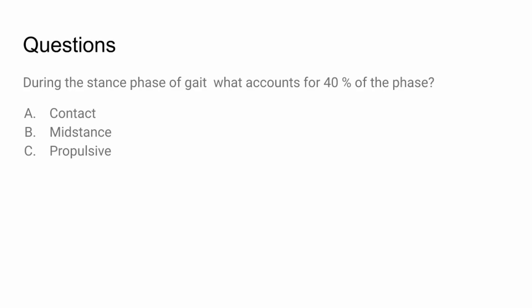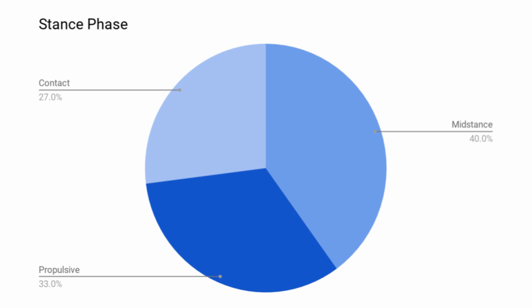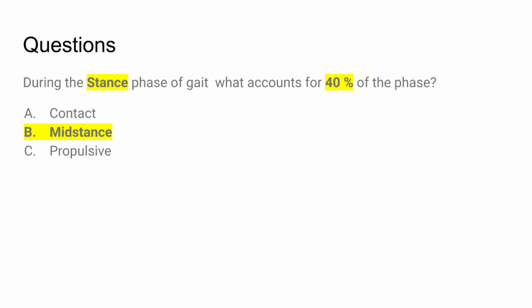During the stance phase of gait, what accounts for 40% of the gait cycle? If we remember how the stance phase is broken down — it's about 62% of the total gait cycle — we know that 40% of the stance phase is mid-stance, 33% is propulsive, and 27% is contact. So the answer here would be B.